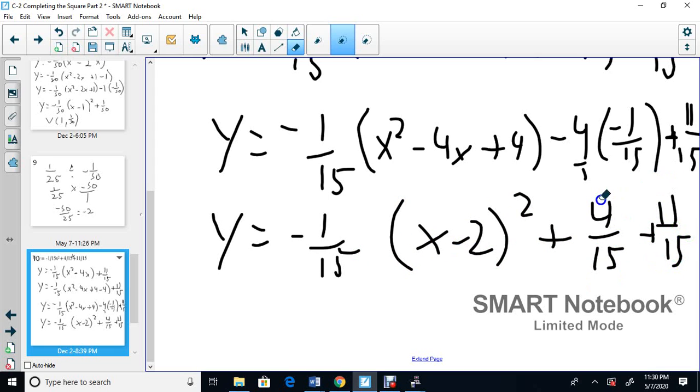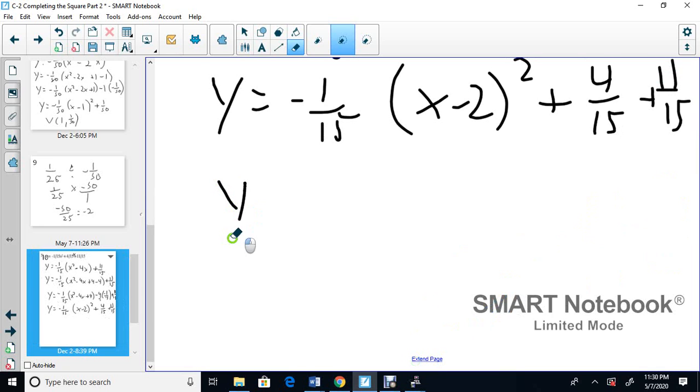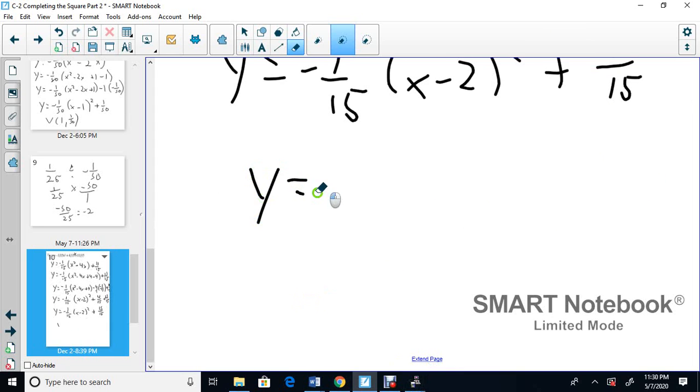When you add fractions, you add the tops. So y equals negative 1 over 15, x minus 2 squared, plus 4 plus 11 is 15 over 15. 15 divided by 15. So you add the tops here, so you get 15 over 15, and 15 divided by 15 is 1. So for this particular case, y equals negative 1 over 15, x minus 2 squared, plus 1. And my vertex becomes 2 comma 1.